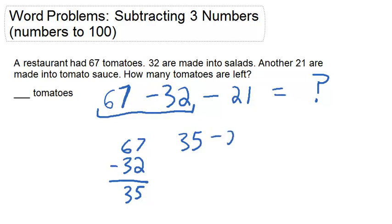So then we need to subtract the 21. We can stack the numbers vertically again. 5 minus 1 is 4. 3 minus 2 is 1. And we see that there's 14 tomatoes left after 21 are made into tomato sauce.